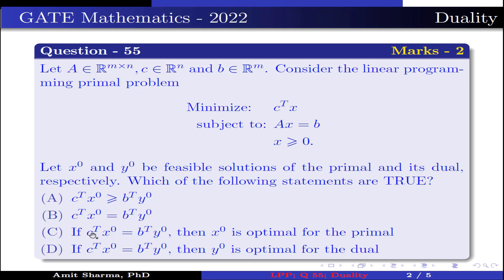Option C: if C^T x0 = b^T y0, then x0 is the optimal solution for the primal. Option D: if C^T x0 = b^T y0, then y0 is the optimal solution for the dual.